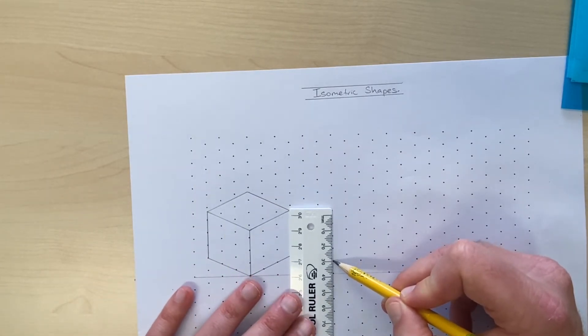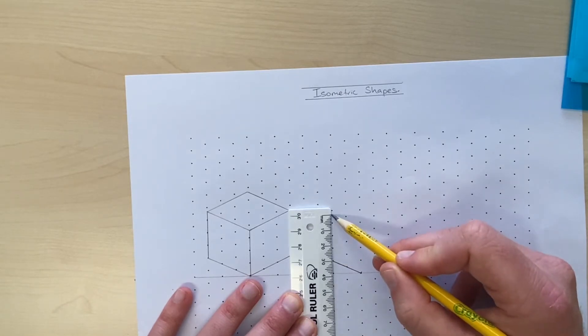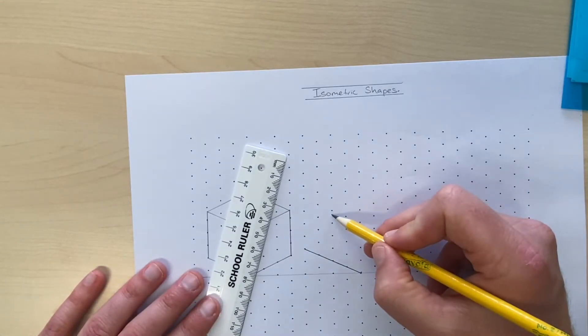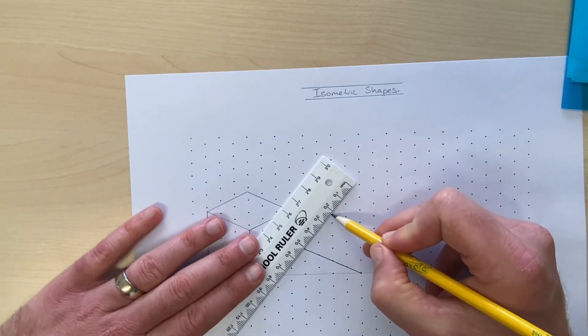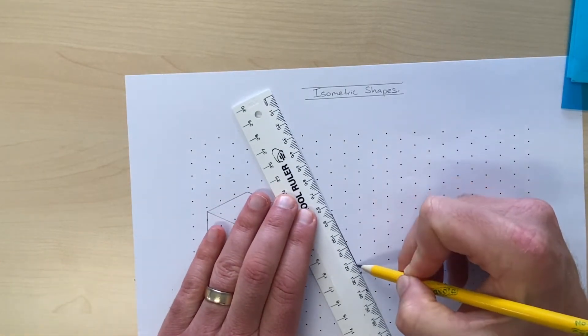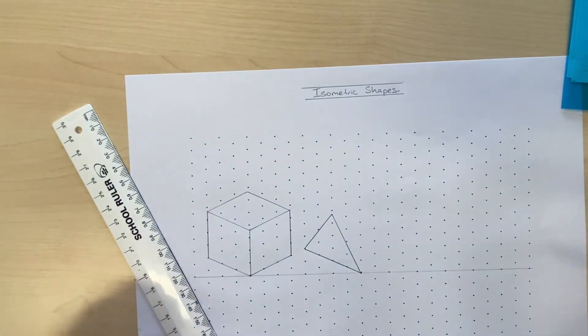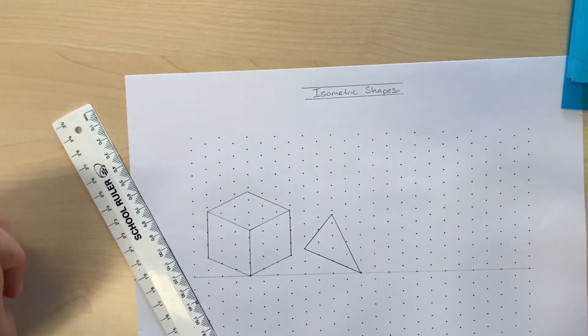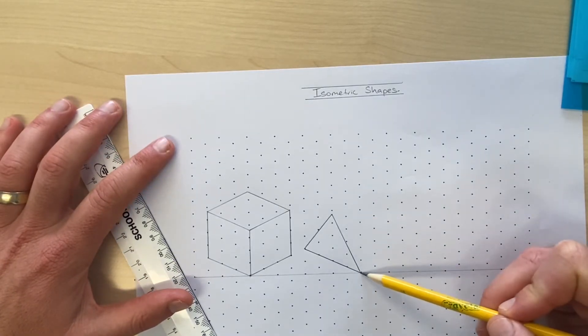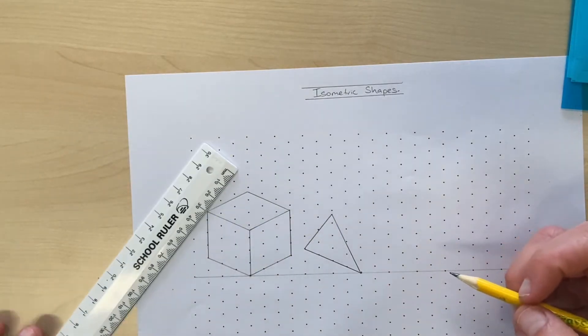Now, remember, you need to use your ruler whenever you're going vertical. Mark the three centimeters up here because your triangle was three centimeters high. And you measure down to that corner like that. And down to the corner. So just pause there. And I want you to go ahead and draw your triangle, the front face of your shape, starting from that front corner there.